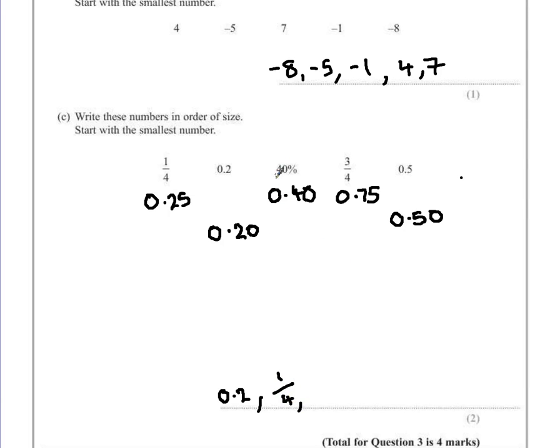After that, 40%, 0.40 is smaller than the other two. Now it doesn't matter if you use your converted values, but just to make sure that we use the actual numbers given in the question. After that, we have 0.5, leaving three quarters as the largest value on that list.